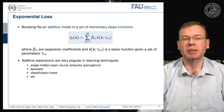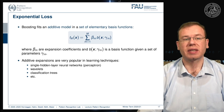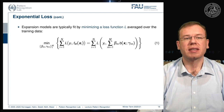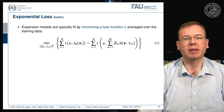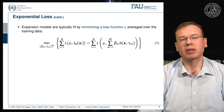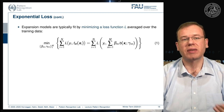You can see that very similar things are already applied in single hidden layer neural networks building on the perceptron, in wavelets, in classification trees, and so on. The expansion models are typically fit by minimizing a loss function L averaged over the training data. We can write this as L over the entire training data and plug in our definition, where we have this additive model essentially given by our function f_m.